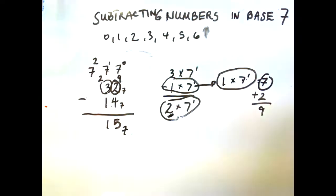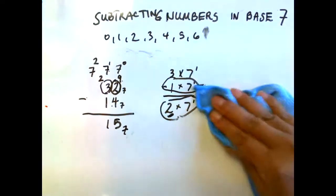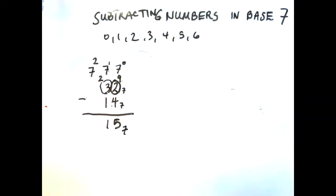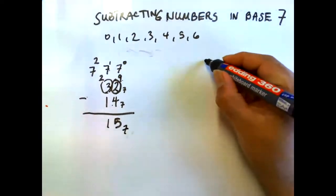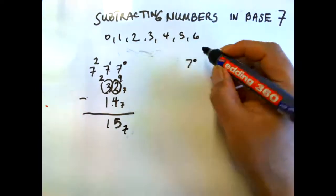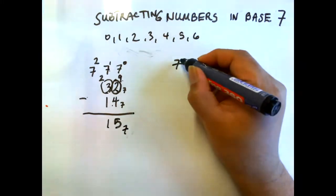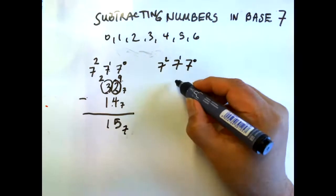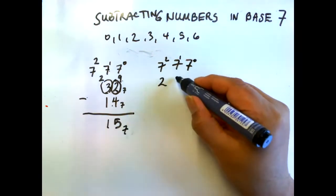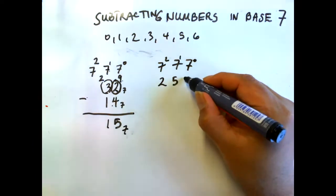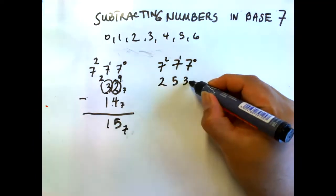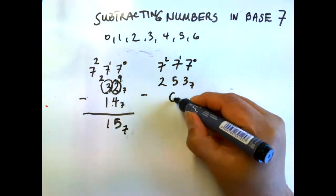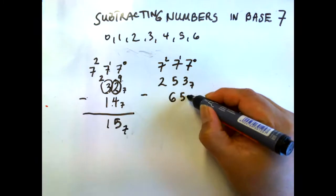Let's have another example, a little bit more challenging. We always write the place value system. Here we'll do two five three in base 7 minus six five in base 7.